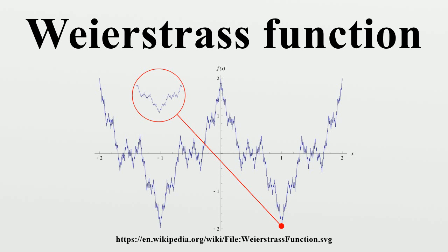It turns out that the Weierstrass function is far from being an isolated example. Although it is pathological, it is also typical of continuous functions. In a topological sense, the set of nowhere differentiable real-valued functions on [0, 1] is comeager in the vector space C of all continuous real-valued functions on [0, 1].